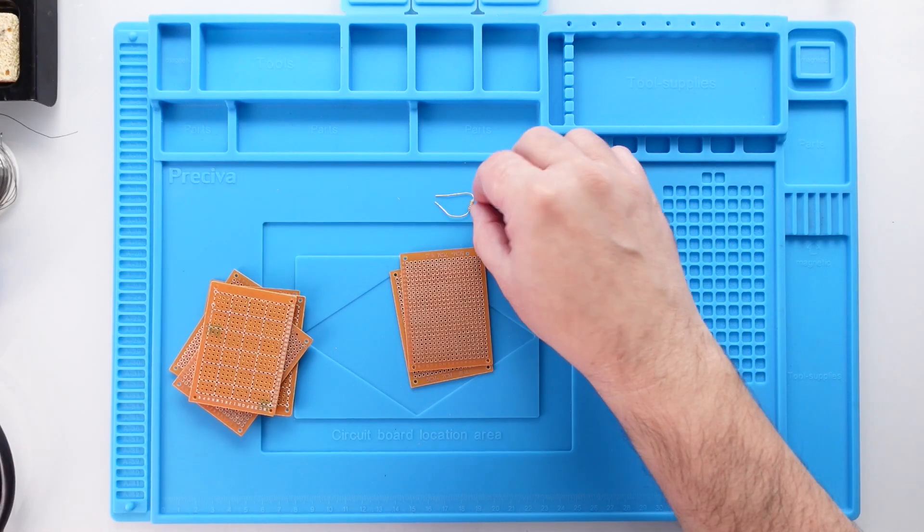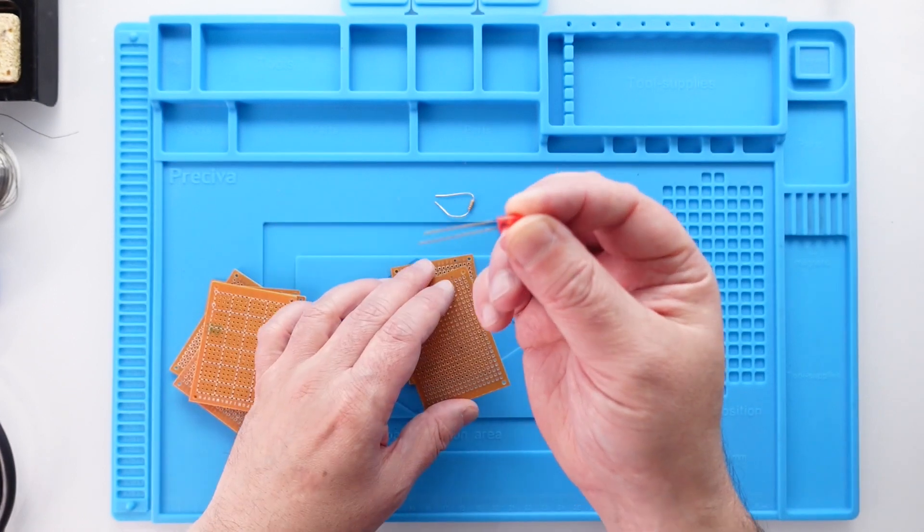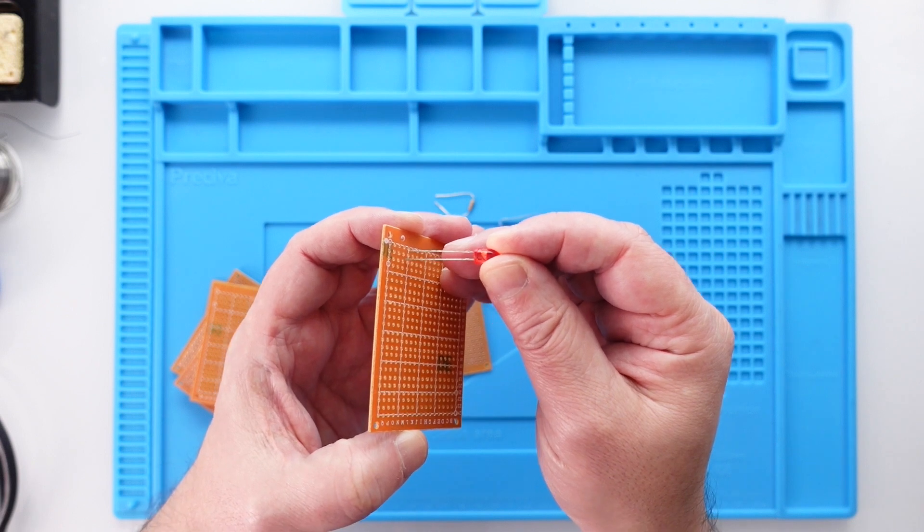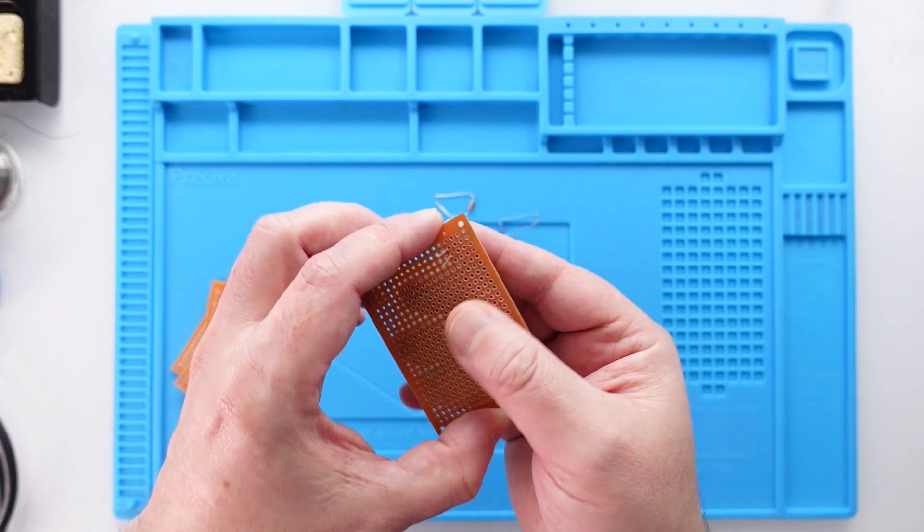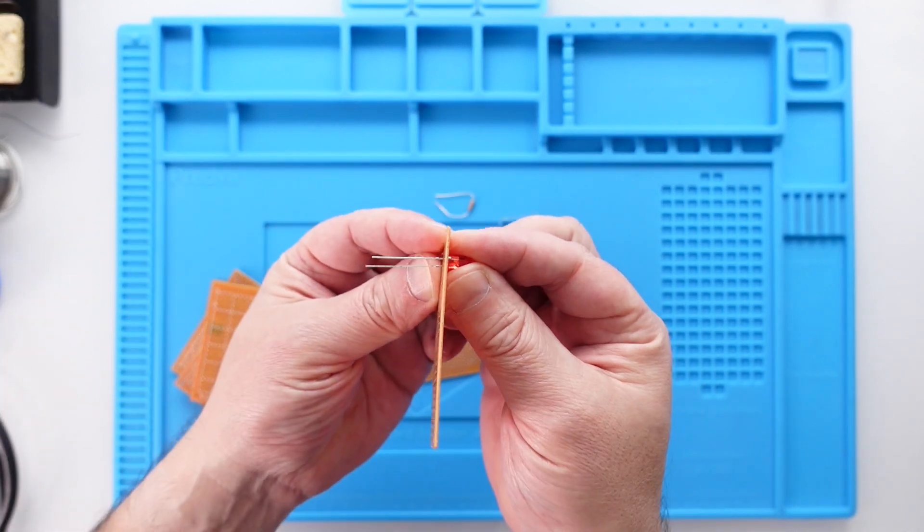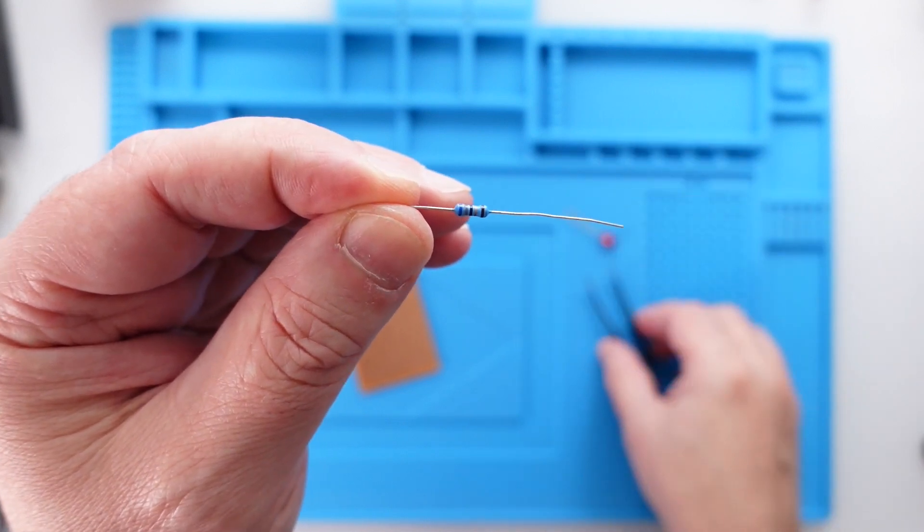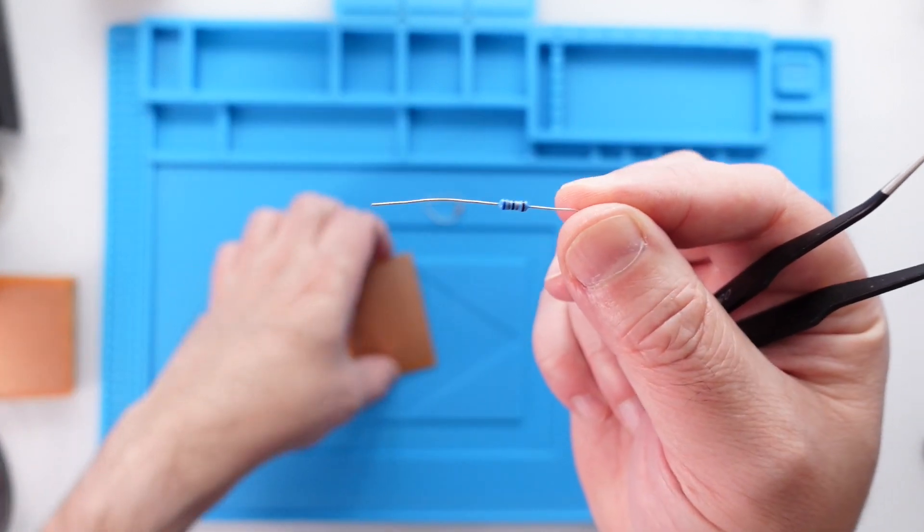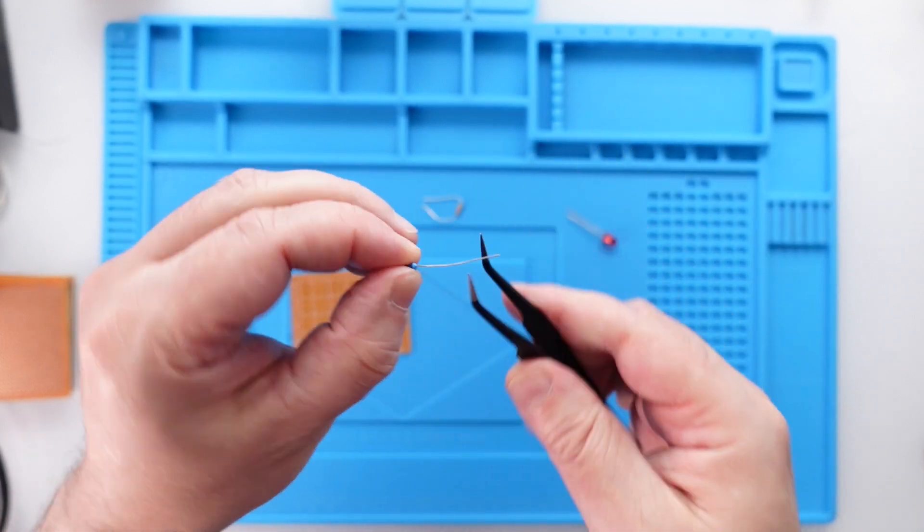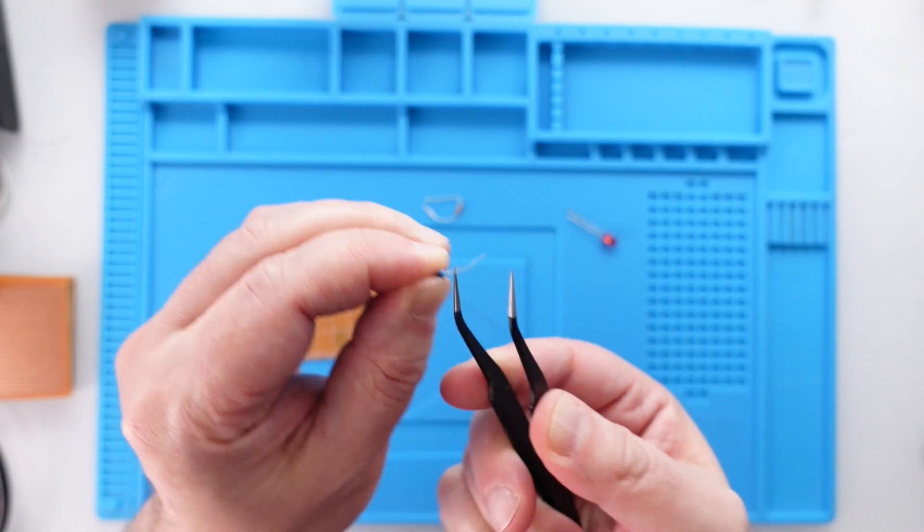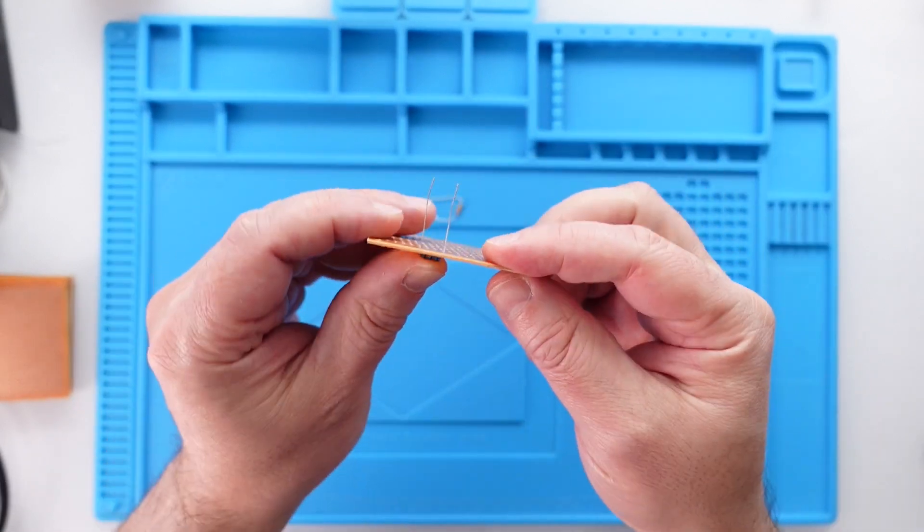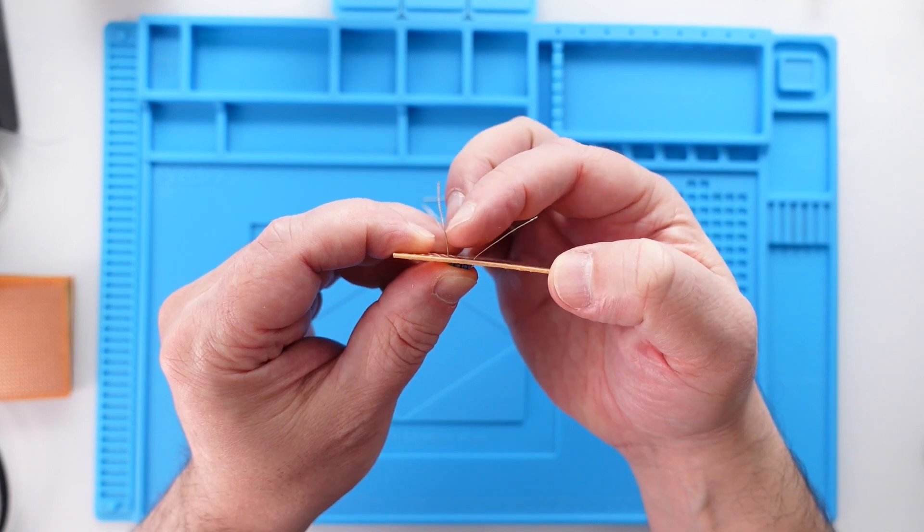First of all, we are going to use what are called through-hole components, like for example this LED here. They all have something in common: they have these long legs which go through these holes on one side. On the other side you can put the solder here so they will get fixed and make contact. First we need to bend the resistor legs at an approximate distance to fit the holes in the board. Once it is inside, bend the legs on the other side to keep it in place.